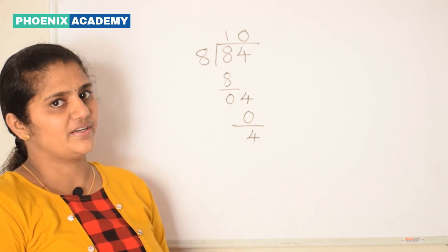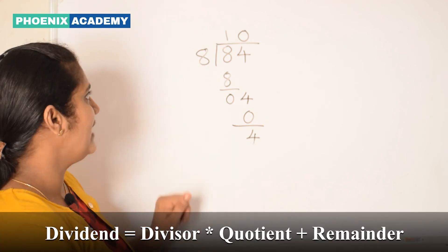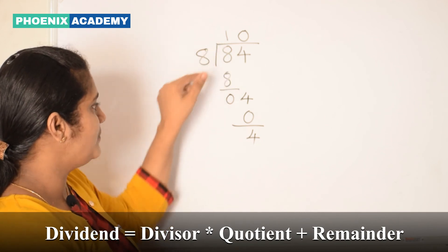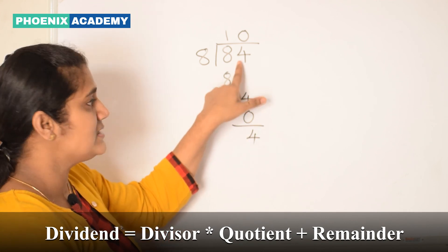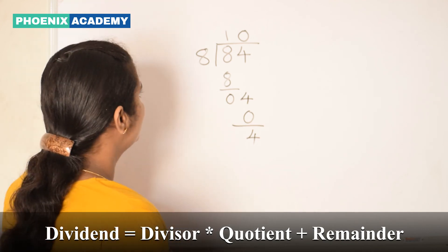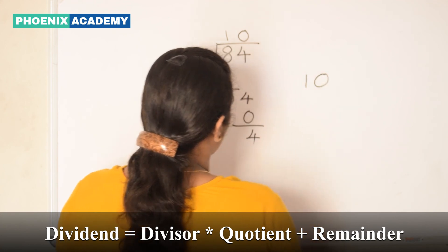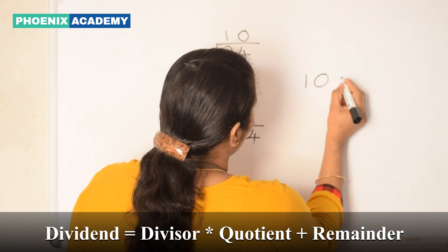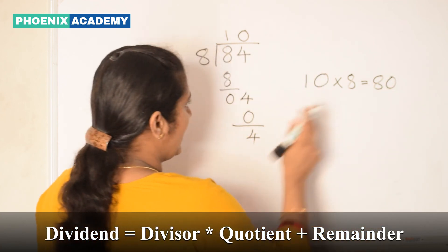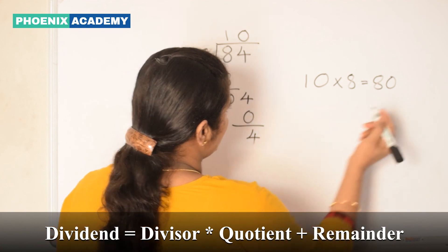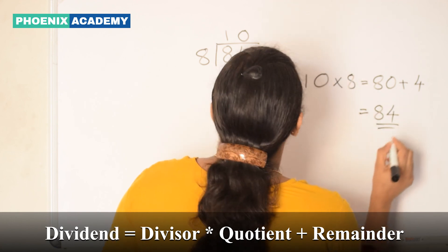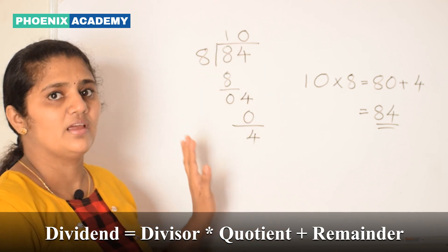Children, do you know how to check if our division is correct or not? To check that, we have to multiply the quotient by the divisor and then add the product to the remainder. We get the dividend. If we get the dividend, then our answer is correct. Let us check here. The quotient is 10. What is the divisor? 8. The answer is 80. And we add the remainder to the product. Remainder is 4. 80 plus 4 is 84. 84 is the dividend. So here our division is correct.